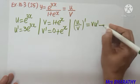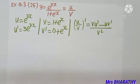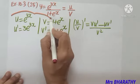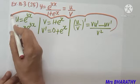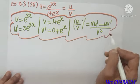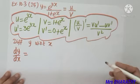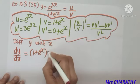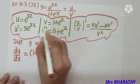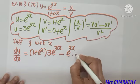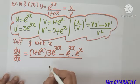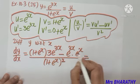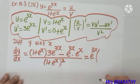We remember the formula: (u/v)' = (v·u' − u·v') / v². As we substitute: dy/dx = [(1 + eˣ)·3e^(3x) − e^(3x)·eˣ] / (1 + eˣ)². Looking at the numerator, e^(3x) is common. We expand: 3×1 gives 3, and 3×eˣ gives 3eˣ.